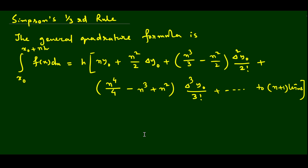Here in Simpson's one-third rule, we have to put n equals to 2 and we have to neglect third and higher order differences. In the trapezoidal rule what we did: we put n equals to 1 and we neglected second and higher order — that means delta square, delta cube, all those differences. So here we have to put n equals to 2 in the general quadrature formula and third order and higher order terms we neglect.